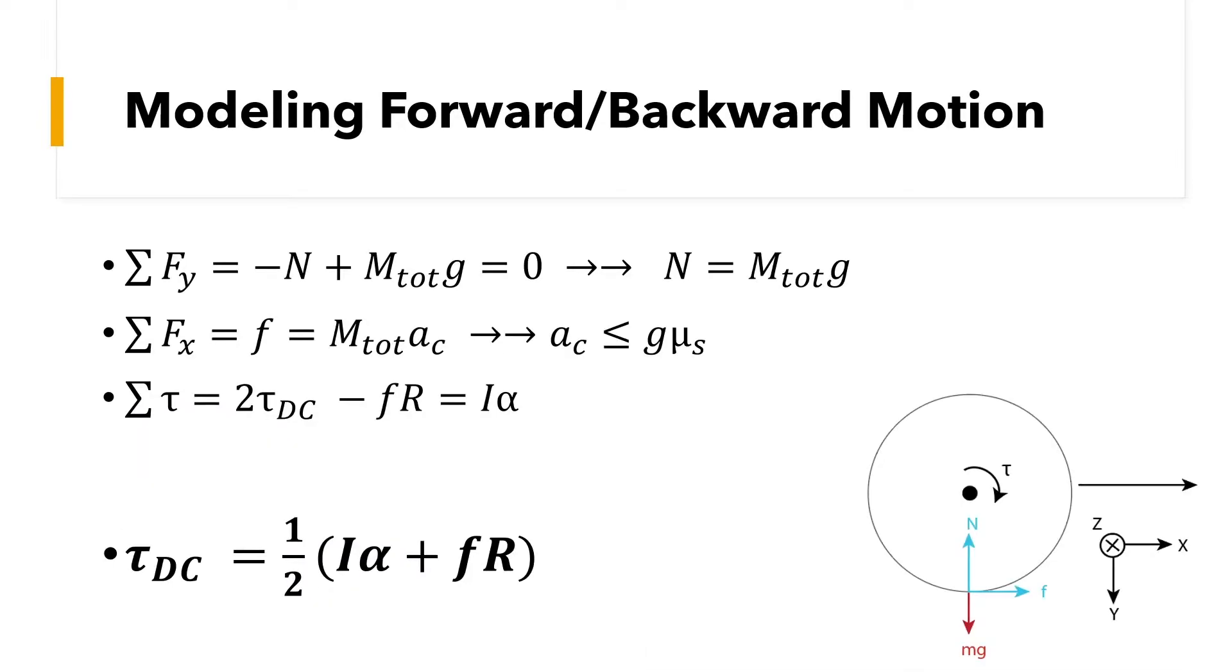After the derivation of the equations of motion, we can see two interesting things. The first one is that there is actually a theoretical maximum limit on the acceleration that the robot can have, and the second one is a design equation which shows us how much torque the DC motors should have in order to overcome the rolling inertia as well as the friction force from the ground.